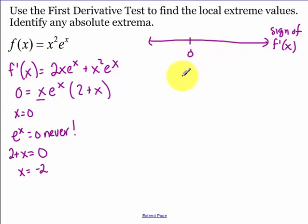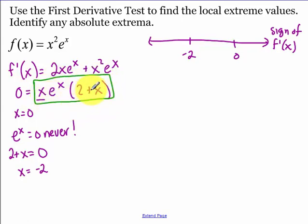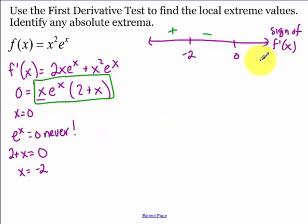Set up your sign chart and label it the sign of f prime. Negative 2 is our critical point. Plugging in negative 3 into the simplified derivative: we have a negative times a positive times a negative, which is positive. Plugging in negative 1: negative times positive times positive, so we're negative. Plugging in 1: positive times positive times positive, so we're positive.